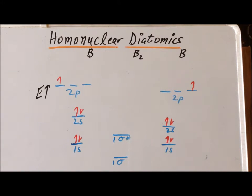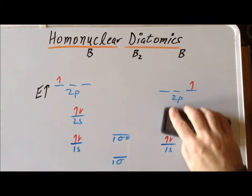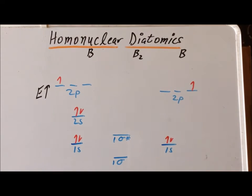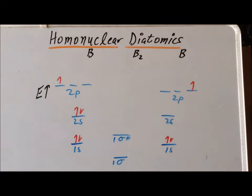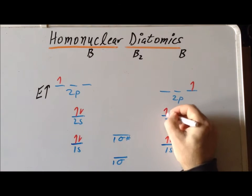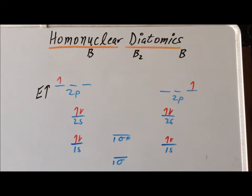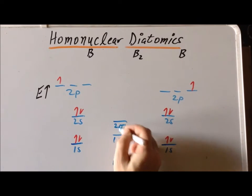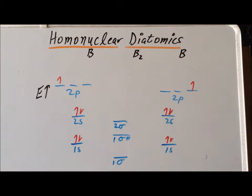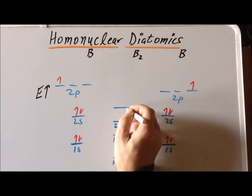We erase that to make it more obvious that the 2s are exactly the same energy. The 2s orbitals, just as in lithium, will overlap to get a bonding combination lower in energy, which we call 2 sigma, and a higher energy combination, which we call 2 sigma star.